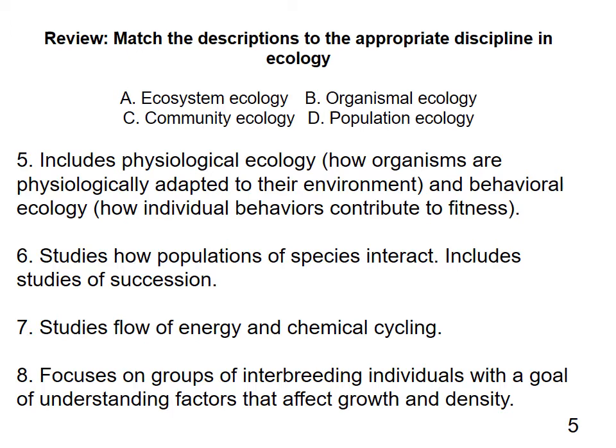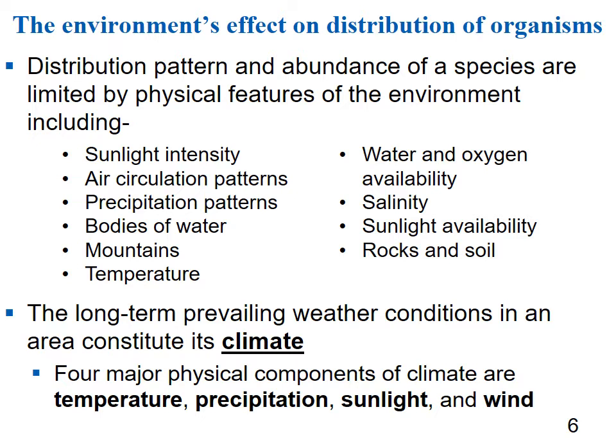The environment affects the distribution of organisms. Distribution pattern and abundance of species are limited by both physical features of the environment and other organisms. Physical features include sunlight intensity, air circulation patterns, precipitation, bodies of water, mountains, temperature, water and oxygen availability, salinity, and rocks and soil. The long-term prevailing weather conditions in an area make up the climate, and there are four major physical components: temperature, precipitation, sunlight, and wind.